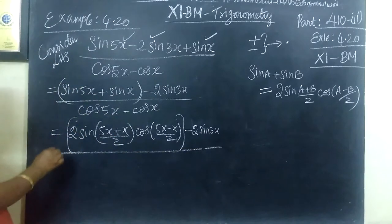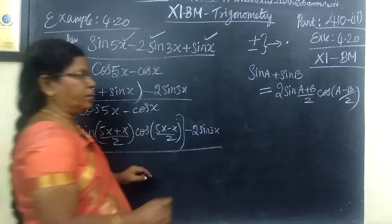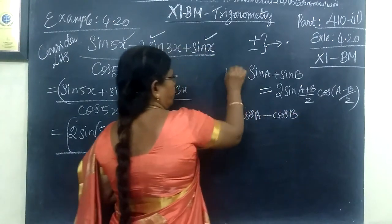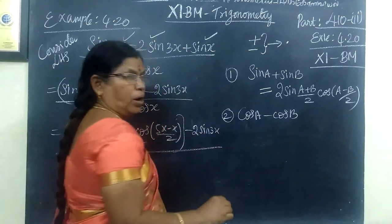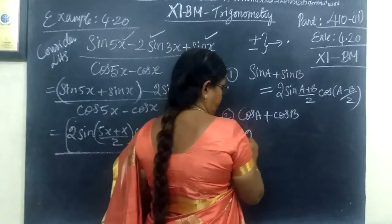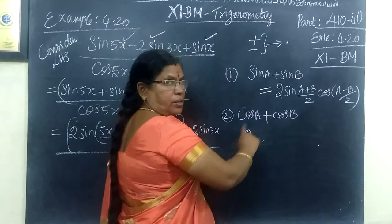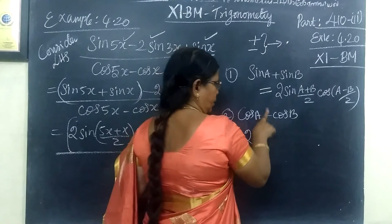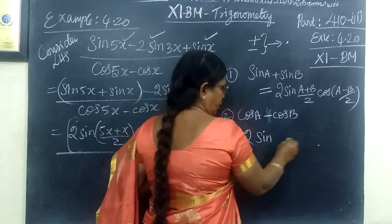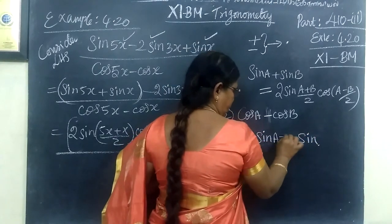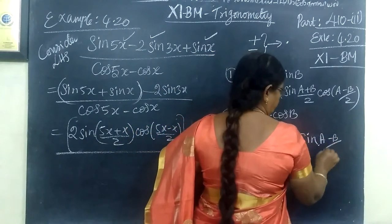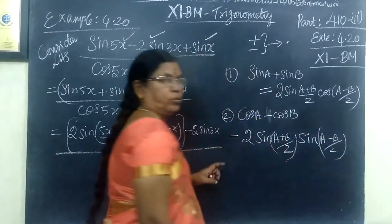2 sin 3x. Then cos a minus cos b. You know cos A minus cos B. This is formula 1 and formula 2. Suppose plus are in the same way cos. Here's cos A minus cos B. Cos cos cos. But here's minus. That's a minus. This is sin A plus B by 2, then A minus B by 2. So remember the formula.